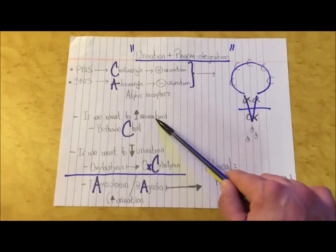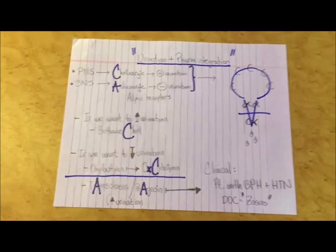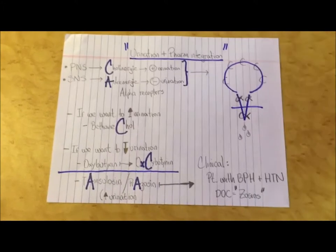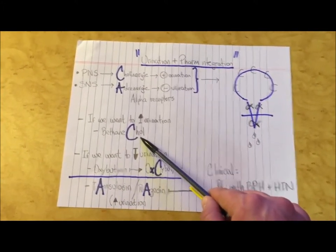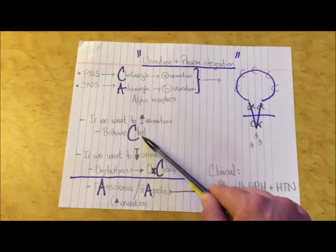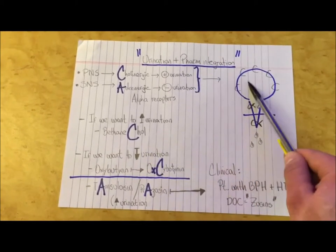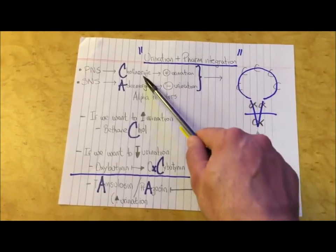If we want to increase urination, such as in the case of a post-op bladder that does not want to contract properly, we can use a cholinergic agonist such as bethanacol. Bethanacol causes contraction of the bladder through the cholinergic receptors.